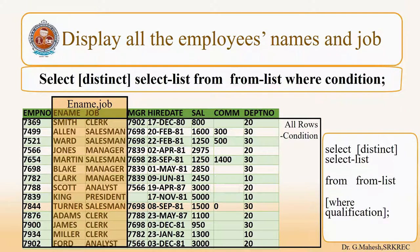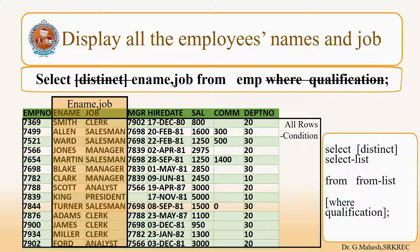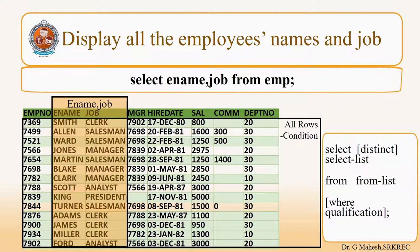Let us display all the employee names and job. We want all the employee names, therefore WHERE clause is not necessary. We want ENAME comma JOB, so you have to give ENAME, JOB in the place of the selection list. And after the FROM clause you have to give EMP. The final query will be SELECT ENAME, JOB FROM EMP, and the result is highlighted.